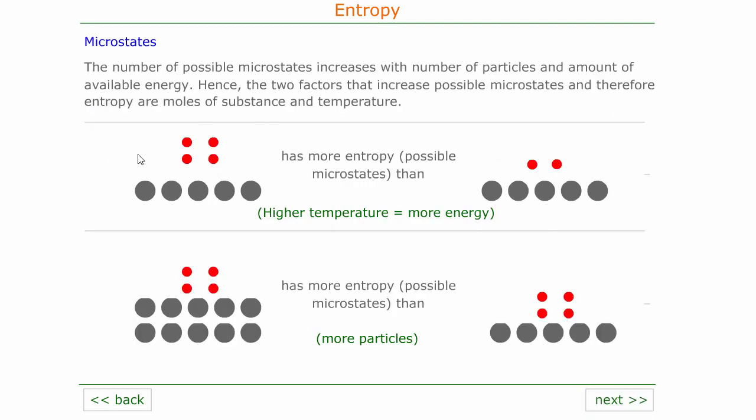Our microstates increase in number by having more energy — as we have more energy we get more microstates possible, and as we have more particles we get more microstates possible. The number of possible microstates of a system is what we call the entropy: it's the number of possible ways we can get the same macroscopic result. Nature will move towards the situation that has a greater amount of entropy because this is a much more likely outcome, and so nature drives all change in the universe.